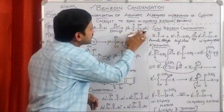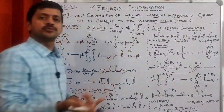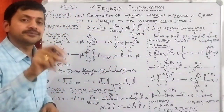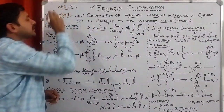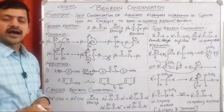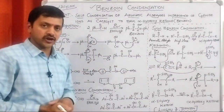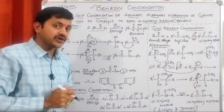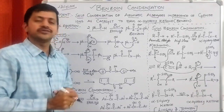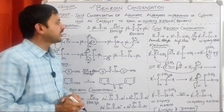If the phenyl groups are replaced with aliphatic groups, then the compound is commonly called acyloin. We had already discussed acyloin condensation as the first named reaction.